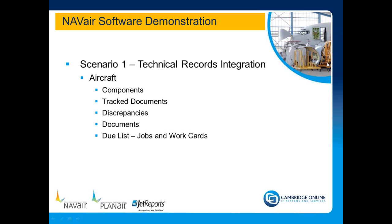To sum up, we have looked at the data held within the system — aircraft, component, track documents and discrepancies. I then showed you how the integrated data follows the process flow leading to the production of the due list and work pack. This concludes Scenario 1. Our next item, Scenario 2, shows how we can now start to plan the maintenance work using our graphical planning tool PlanAir. Thank you.